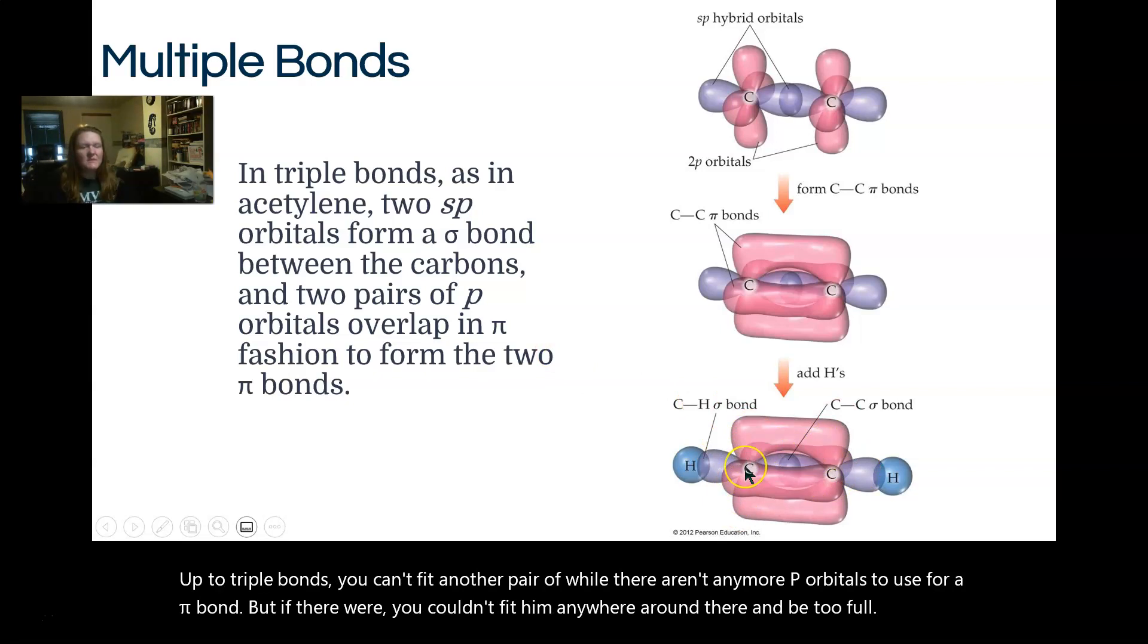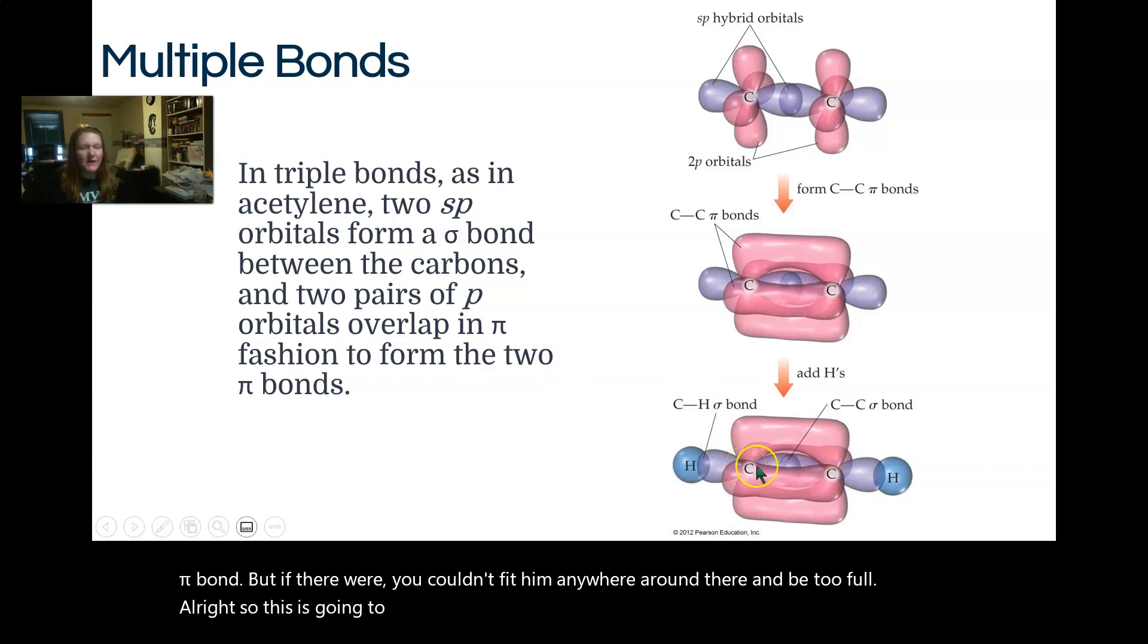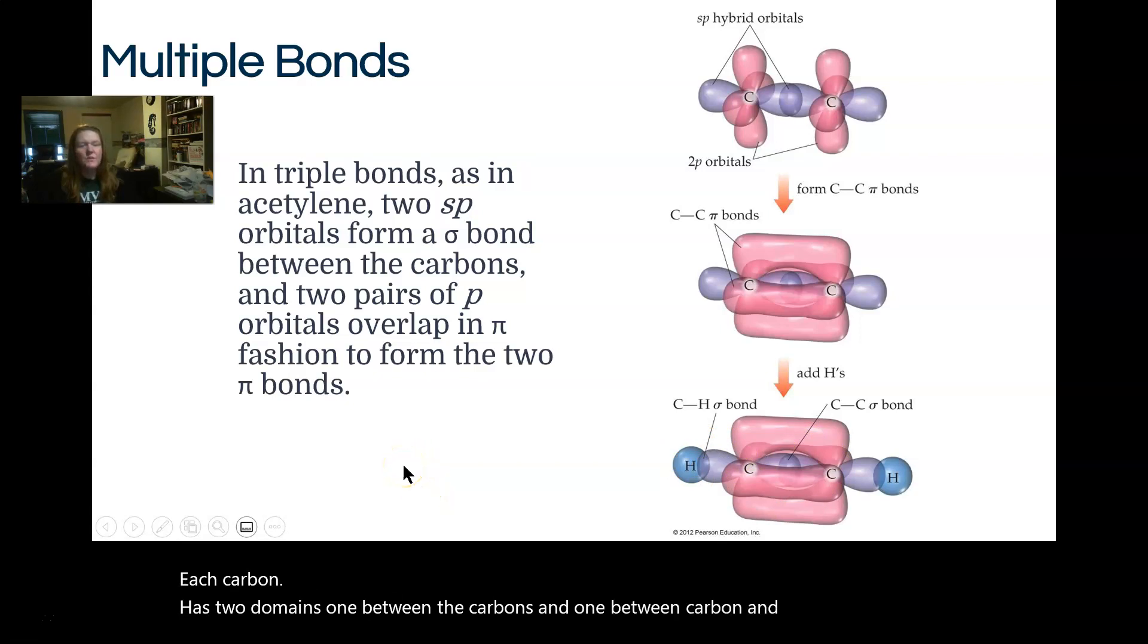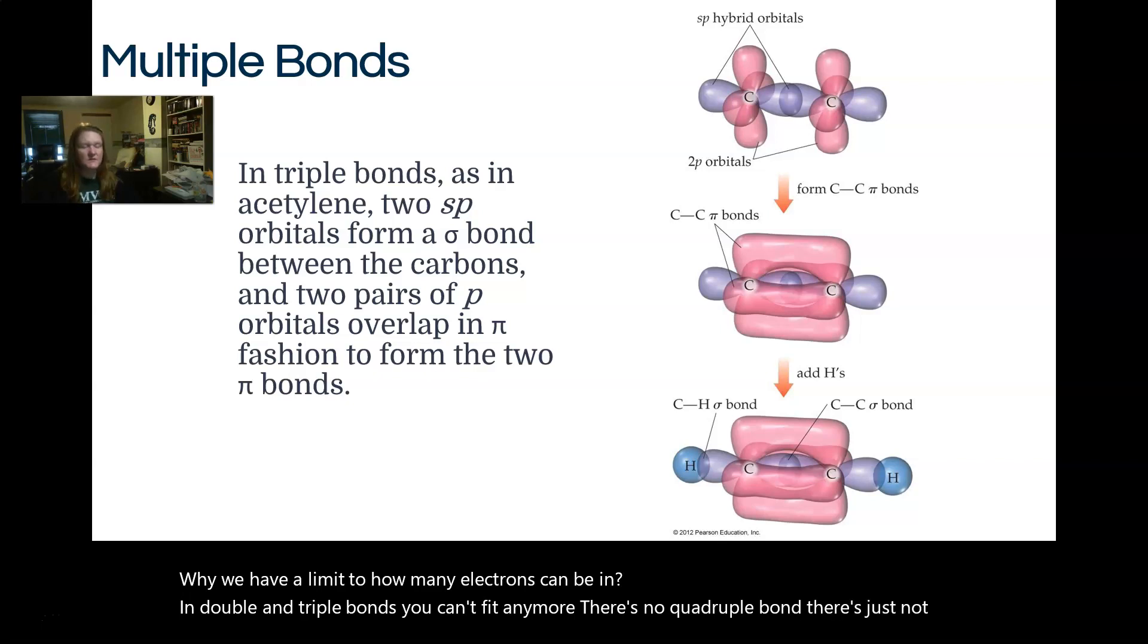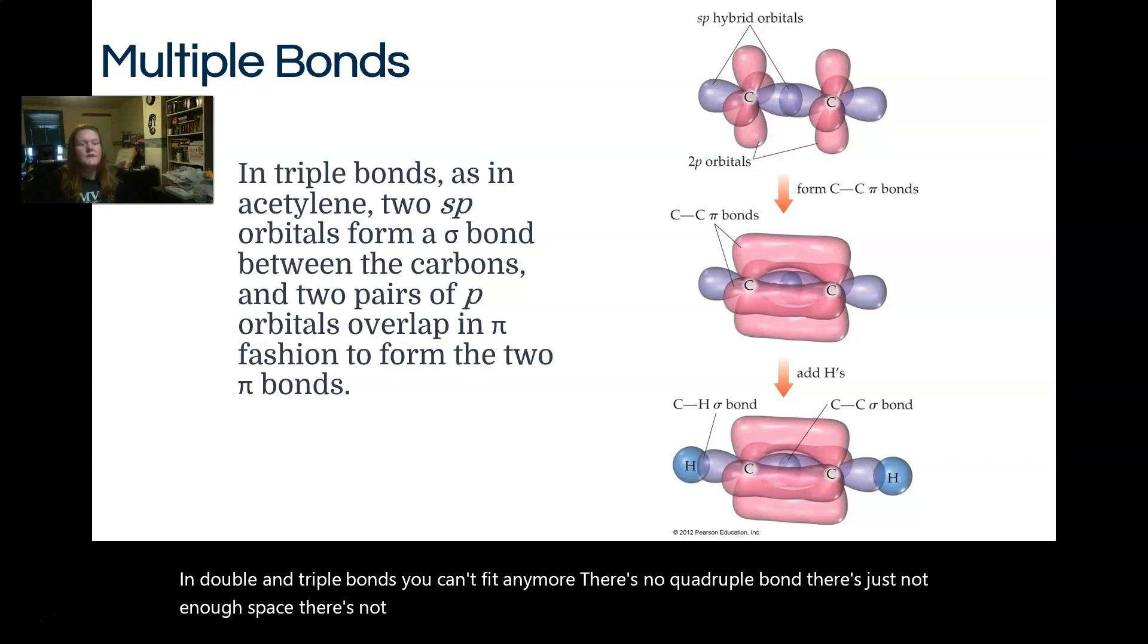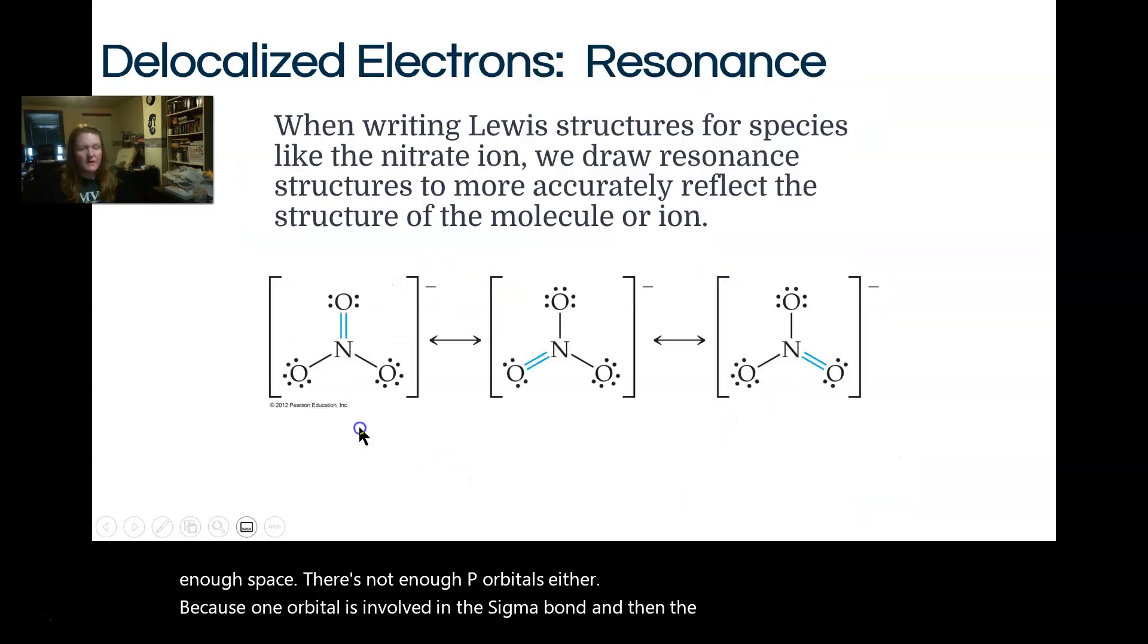So this is going to be sp hybridized because each carbon has two domains, one between the carbons and one between carbon and hydrogen. And so this is why we have a limit to how many electrons can be in double and triple bonds. We can't fit anymore. There's no quadruple bond. There's just not enough space. There's not enough p orbitals either because one orbital is involved in the sigma bond, and then the other two p orbitals are making the double or triple.